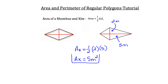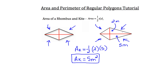We haven't spent much time discussing perimeter in this tutorial, and that's just because perimeter doesn't really change for these regular polygons — it's just the distance around the figure, so the sum of all the side lengths added together. On this rhombus on the left and the kite on the right, you just add the four side lengths together to get the perimeter — the same applies to parallelograms, triangles, and trapezoids.